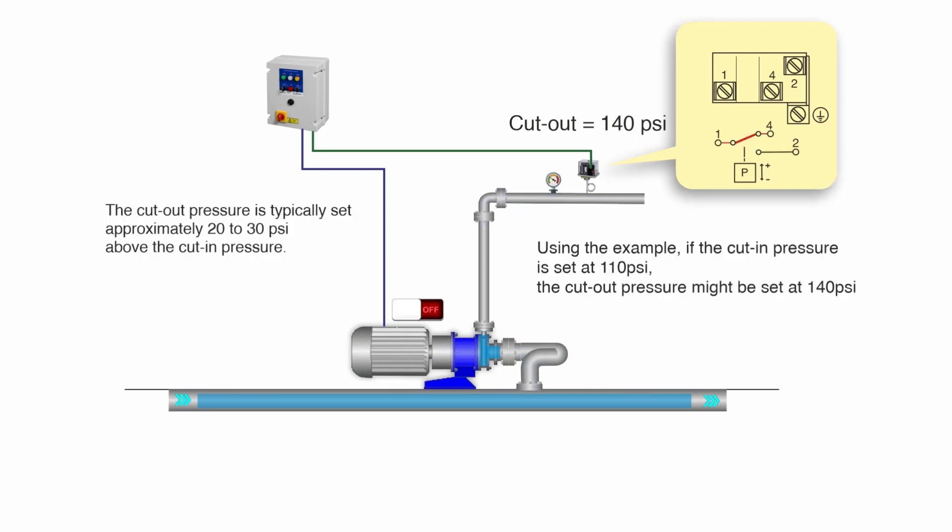The cut-out pressure is typically set approximately 20 to 30 psi above the cut-in pressure. Using the same example, if the cut-in pressure is set at 110 psi, the cut-out pressure might be set at 140 psi.